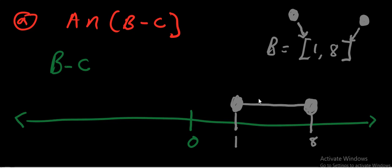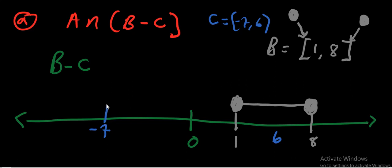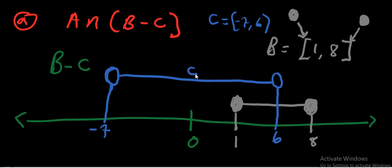Connect those two points to complete set B. Next, on the same number line we indicate set C. Set C is open bracket negative seven comma six, open bracket. We put negative seven and six on the number line. Since both brackets are open, we use unshaded circles, then connect the two points to make set C.